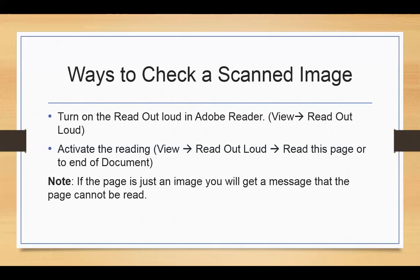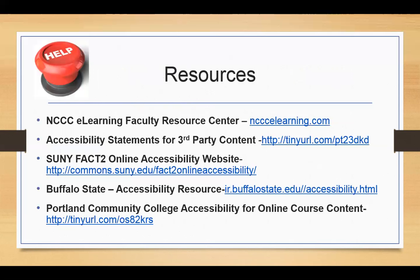Those are the main things for creating an accessible PDF. If you have a Word document, Excel spreadsheet, or PowerPoint, go through the Accessibility Checker, set them up properly, then save as PDF so they'll be readable by screen readers. We also have resources available: the Buffalo State page has a one-hour video on making PDFs accessible, the FACT2 Accessibility website has documentation and videos, and we offer most of these resources through our NCCC eLearning Faculty Resource Center. It's a good idea to check those pages.